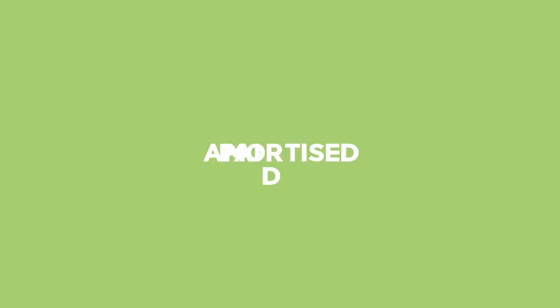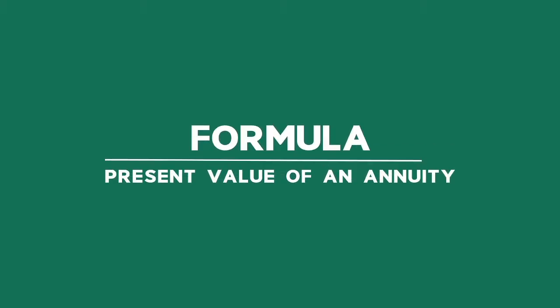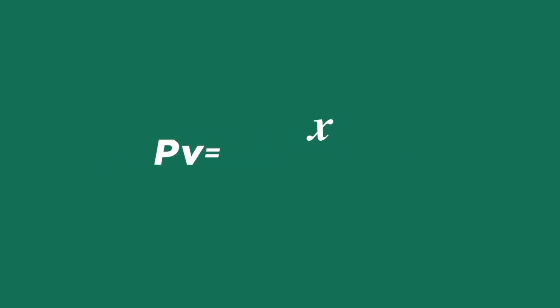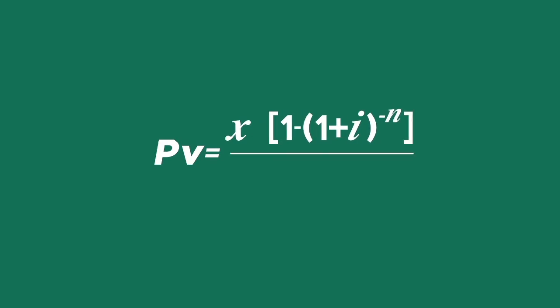The loan is said to be amortised — that is, paid off — when the principal amount together with the interest charges is paid off. The formula used to calculate the present value of an annuity is: PV = x × (1 − (1 + i)^(−n)) / i.